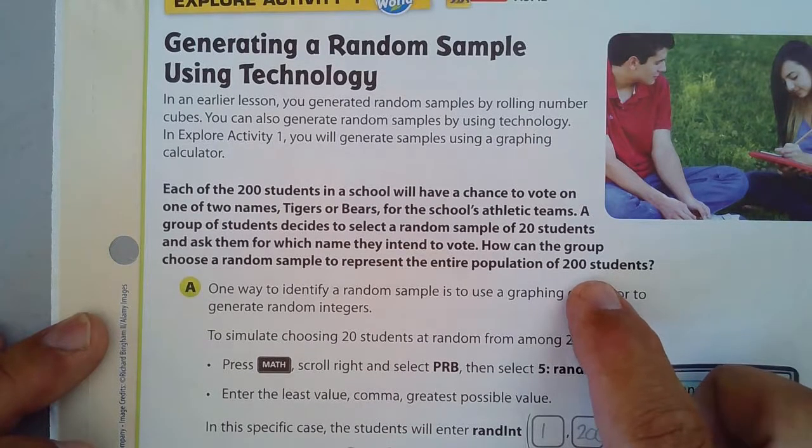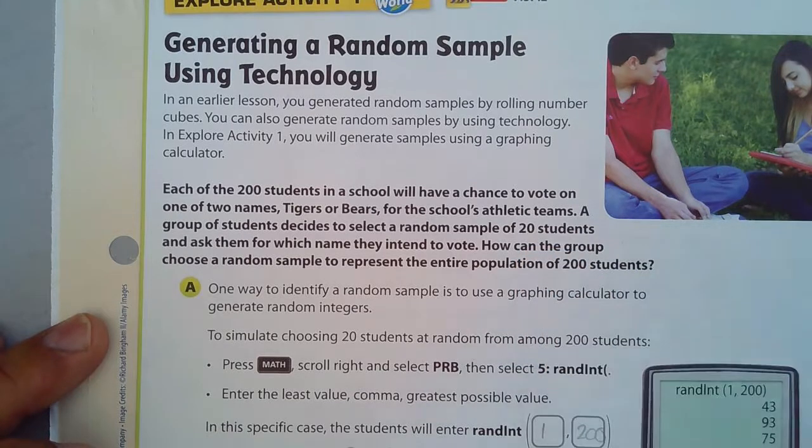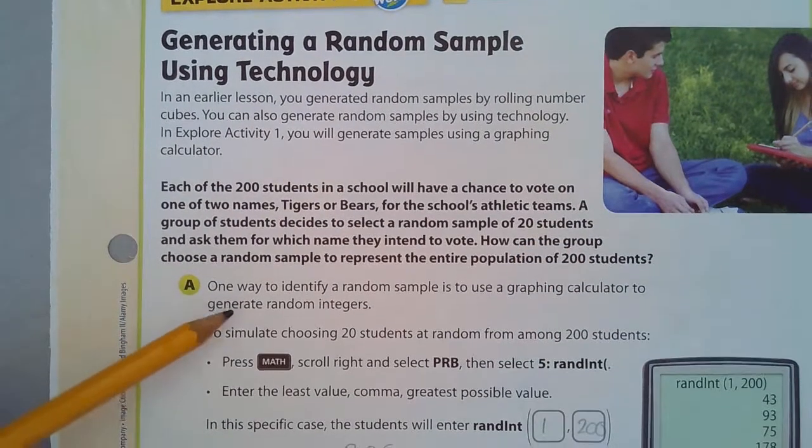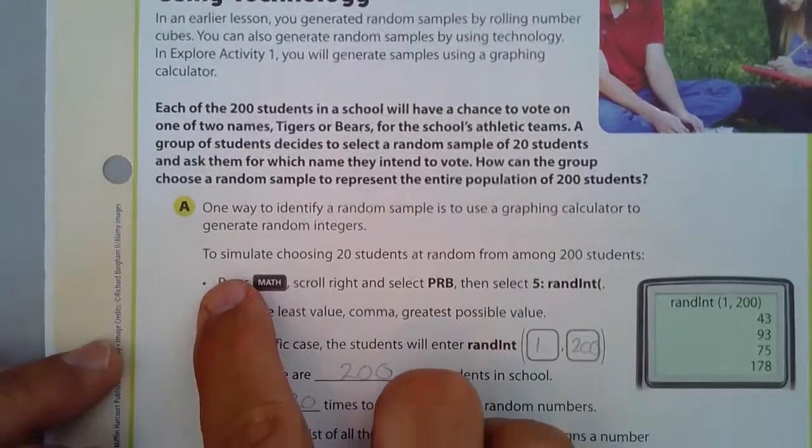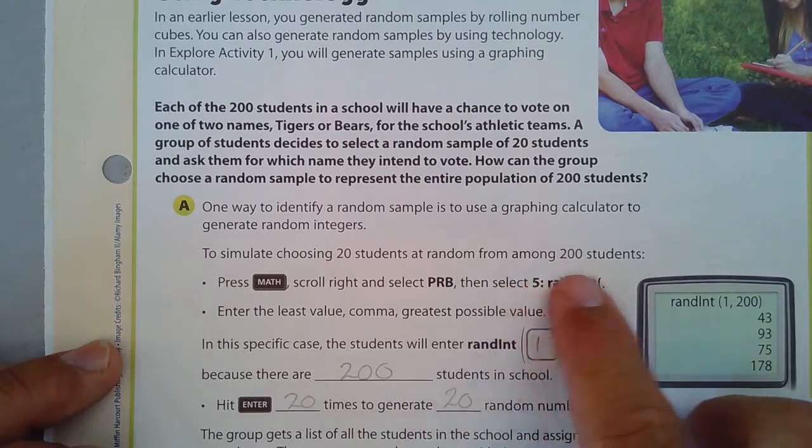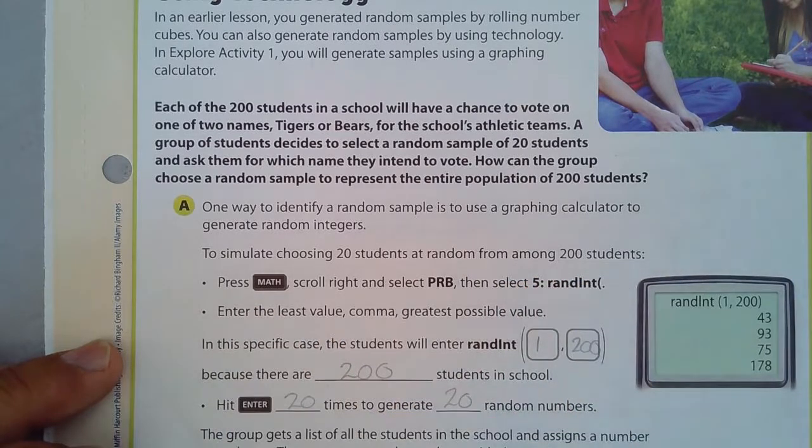How can the group choose a random sample to represent the entire population of 200 students? They don't want to ask every single student; they want to get a random sample of 20. Well, one way is to use a graphing calculator to generate random samples to simulate choosing 20 students at random.